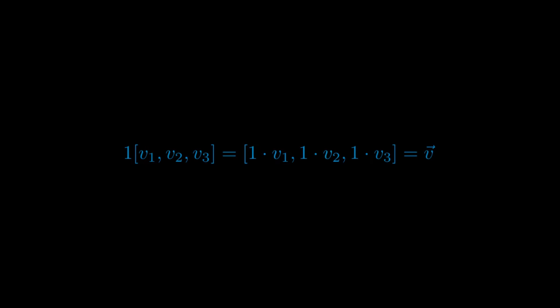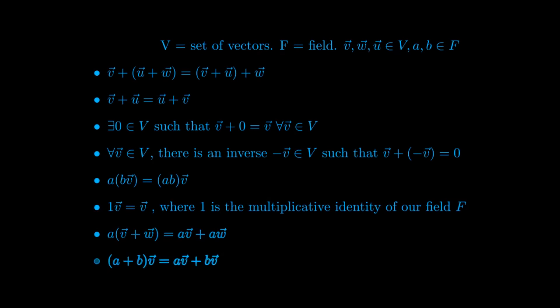Furthermore, we want to show that scalar multiplication, that is the multiplication of a real value by a vector, is compatible with multiplication of real numbers. Now, these properties are precisely the properties that we postulate a vector space to obey when we study them in linear algebra.